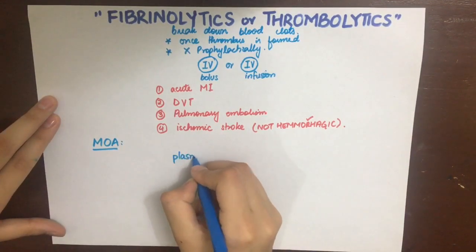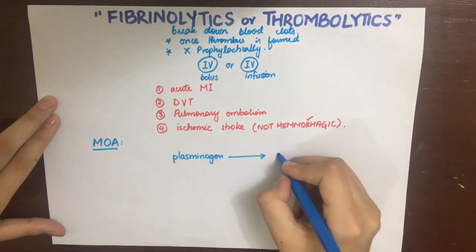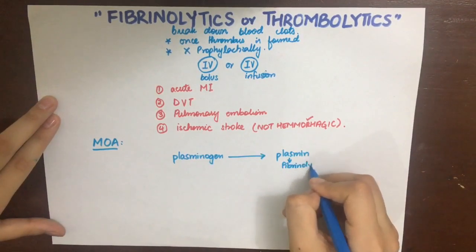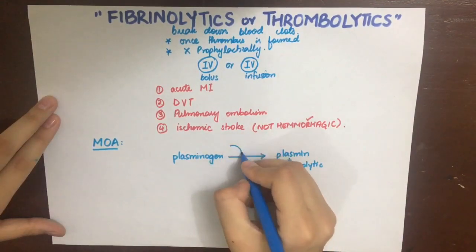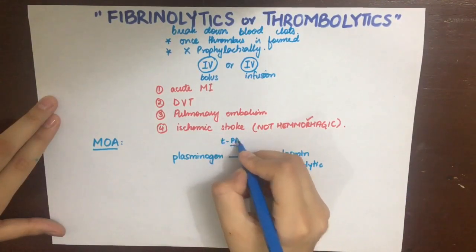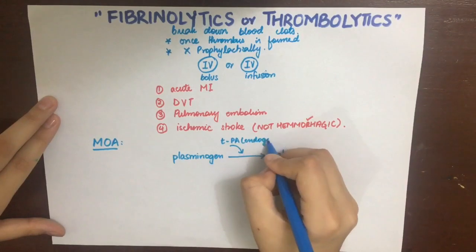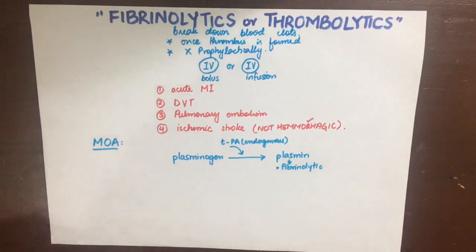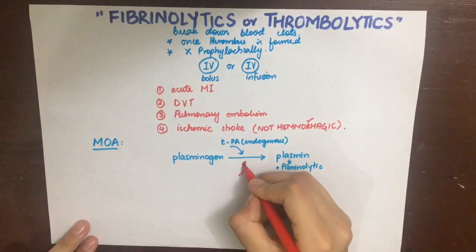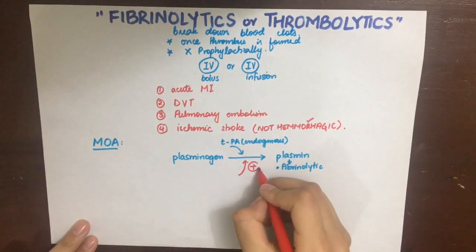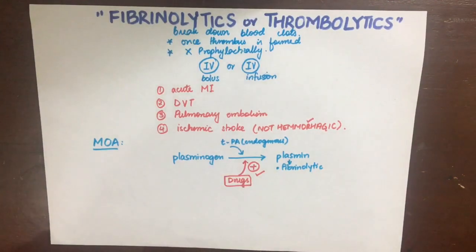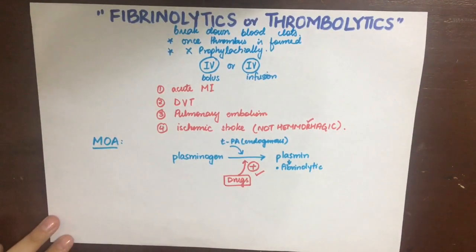To understand the mechanism of action of fibrinolytics and thrombolytics, we need to understand that whenever there is endothelial injury or stasis, apart from pro-coagulation and pro-platelet aggregation factors, molecular brakes such as tissue plasminogen activator (tPA) are also released to keep coagulation in check. This tPA converts plasminogen into plasmin, which is a fibrinolytic that breaks down fibrin and rapidly dissolves the blood clot.